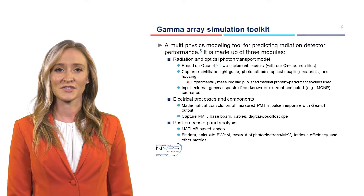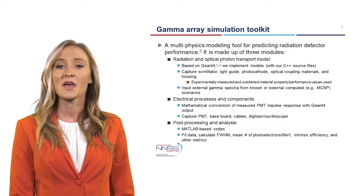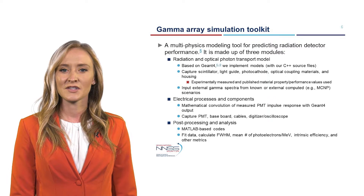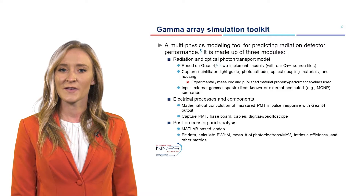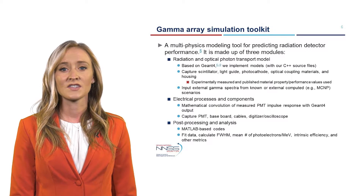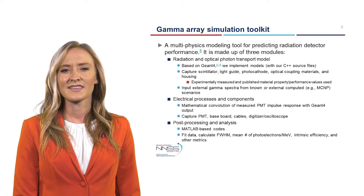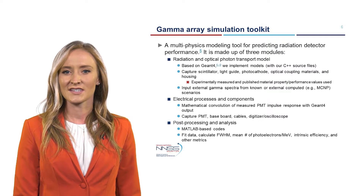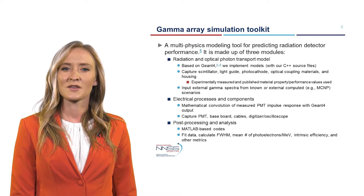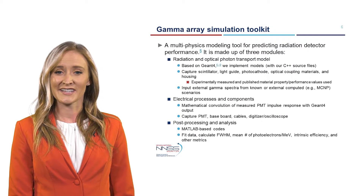The final module uses post-processing in MATLAB codes to compute many of the metrics that we need to determine performance. These include chi-squared fits to the data, full width half max of the time response, the distribution of photoelectrons per MeV deposited, the intrinsic efficiency to gammas, and other quantities. This final product is an important tool for decision making and for interpreting data.